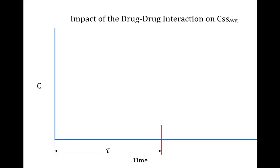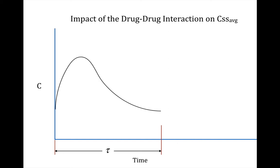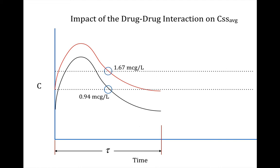Let's examine the impact of the drug-drug interaction on average steady state concentration using graphs. This is what it might have looked like giving the dose by itself without quinidine, and then with quinidine added, the concentration increases to 1.67 at average steady state. There may be an alteration in volume, half-life, or both, but certainly the clearance is reduced.